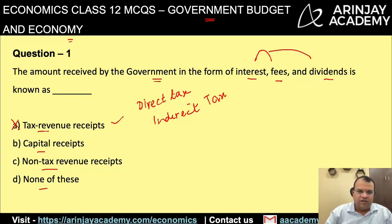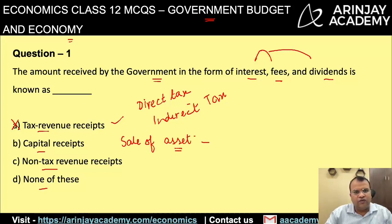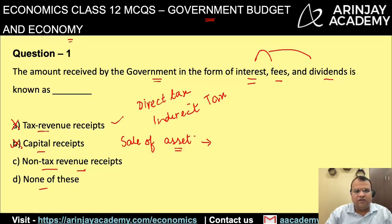Capital receipts are receipts realized by the government by sale of assets. When the government does a disinvestment program, for example, and it sells shares of one of the government companies, that is where capital receipts come into play. They are not interest, fees and dividend. Non-tax revenue receipts is the right answer — interest, fees and dividend qualify as non-tax revenue receipts, and therefore the correct option is C.